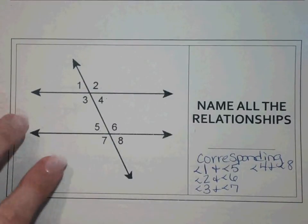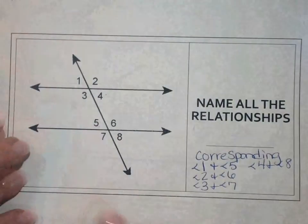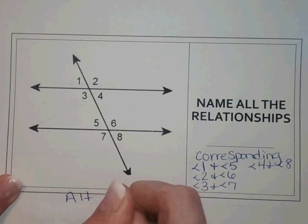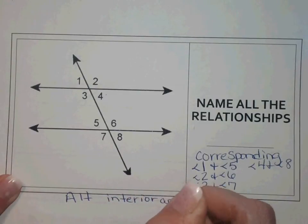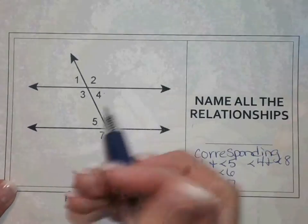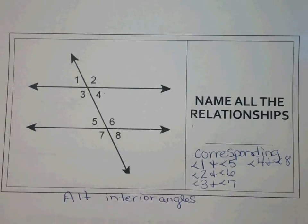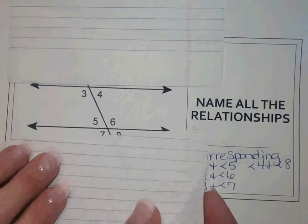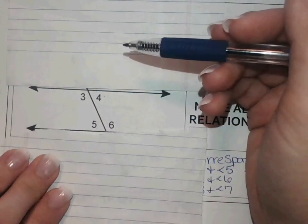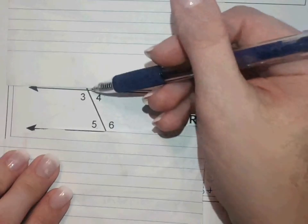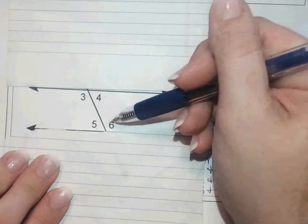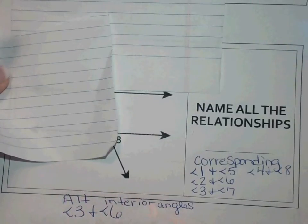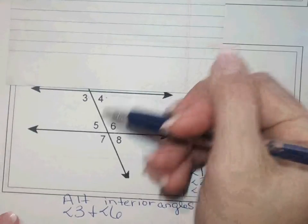Now I want to look at the alternate interior angles. Interior — like the interior of a house — means the inside. I'm going to look on alternate or opposite sides of the transversal. So angle three and the opposite side is angle six. That gives us the pair angle three and angle six. Then I've got another pair: angle four and angle five.